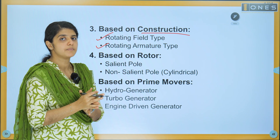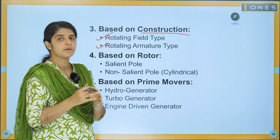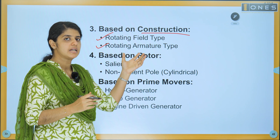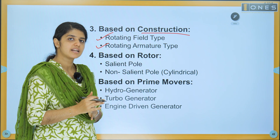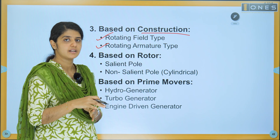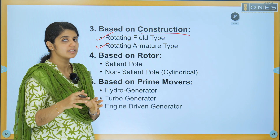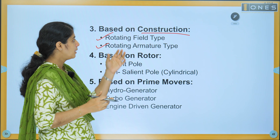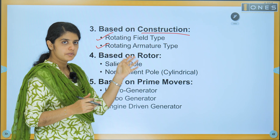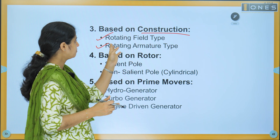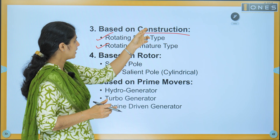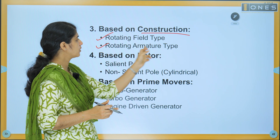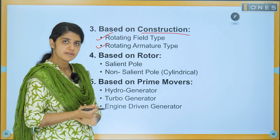In DC machines, we rotate the field. In the alternator, it is reverse — usually it is practically the rotating field type. Based on construction, we have rotating field type and rotating armature type.